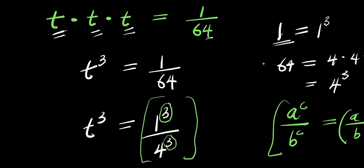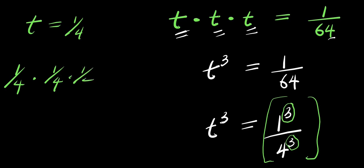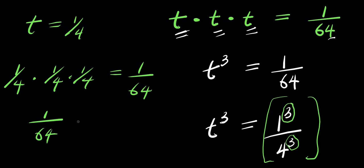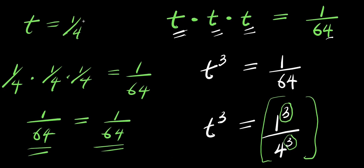So these are two complex solutions, and we also have a real solution which is 1 over 4. If you want to check, insert t equals 1 over 4: you have 1 over 4 times 1 over 4 times 1 over 4, which gives 1 times 1 times 1 over 4 times 4 times 4, that is 1 over 64. So the left-hand side equals the right-hand side — that is obviously correct. So that is it, thank you and goodbye.